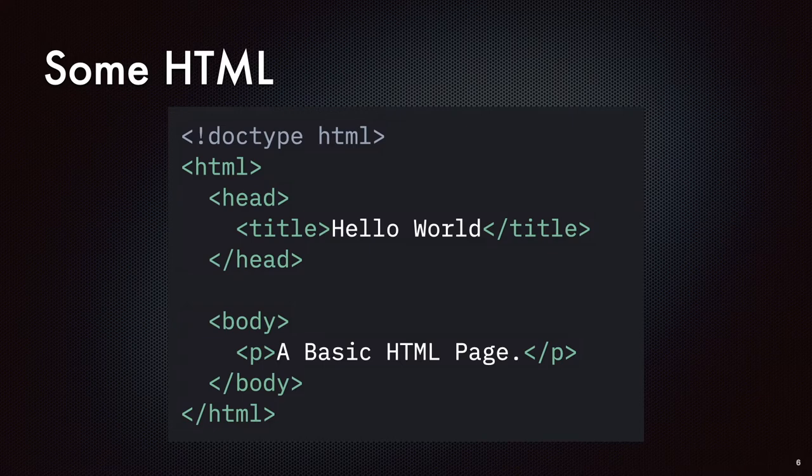If you think back to grade school when you had a paper, somebody would mark it up by highlighting it, underlining it, or circling things. There's the content and then there are pieces added to the content to emphasize, describe, and add meaning to the content. That's the markup.